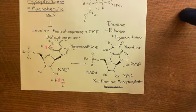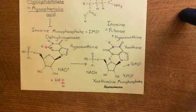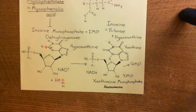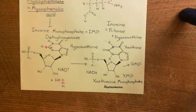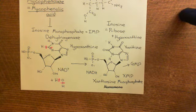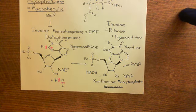The reason mycophenolate is specific for T and B lymphocytes — at least to some extent — is that other cells have alternative mechanisms by which they can create guanosine triphosphate and deoxyguanosine triphosphate. That concludes our discussion of the immunosuppressants. What we're going to move on to is other drugs used to treat rheumatoid arthritis — disease-modifying anti-rheumatic drugs — some of which do have immunosuppressive actions, although they're not classically considered immunosuppressants. See you for the next video.